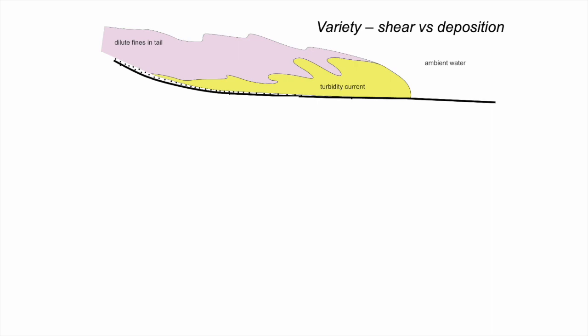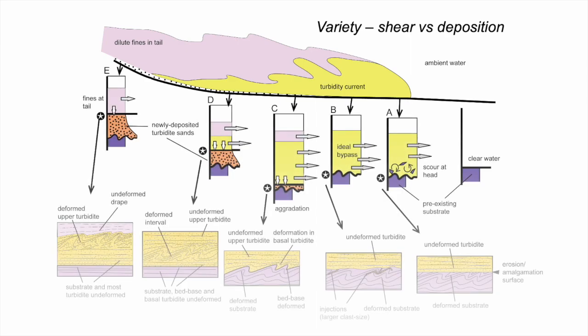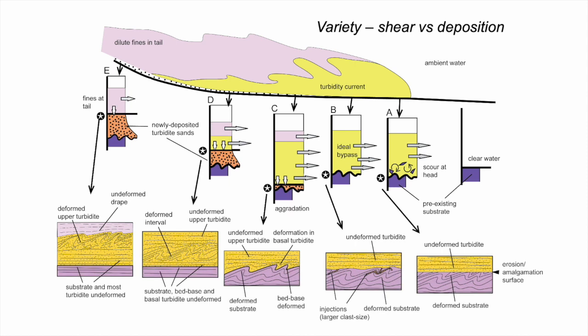So depending on the timing of the shear strain versus deposition, we can get a whole variety of sedimentary structures preserved in turbidite sandstones. You can get an idea of the range of these in this simple cartoon. Sometimes we might have undeformed turbidite sandstones that decapitate deformed layers. In these situations, the kinematic boundary layer shear strains have developed before deposition from the turbidity current that caused that deformation. However, deposits from the flow itself may be deformed by subsequent parts of the same flow — there's a whole variety of possible relationships here.